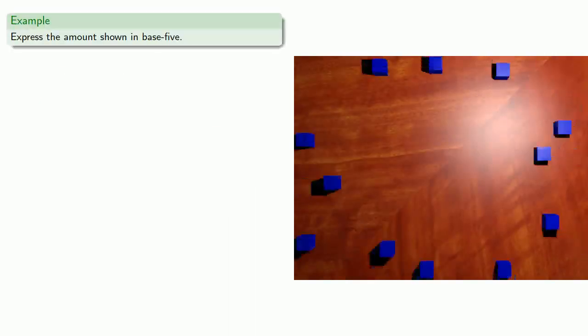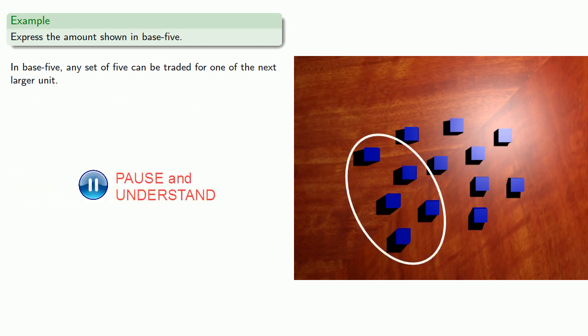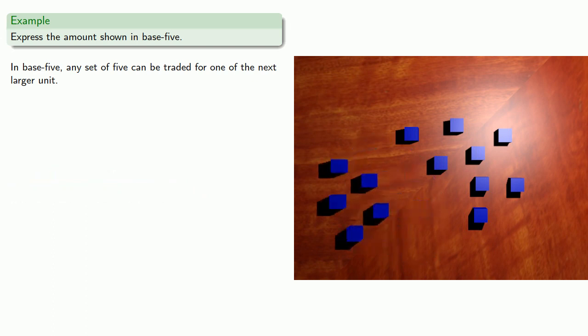So let's express the amount shown in base 5. In base 5, any set of 5 can be traded for 1 of the next larger unit. So we'll identify a couple of sets of 5. So here's a set of 5. And we'll bundle. Here's another set of 5. We'll bundle.